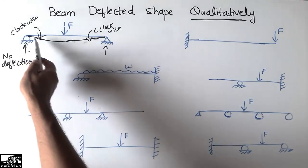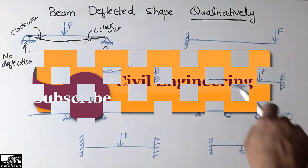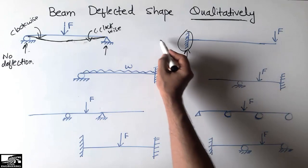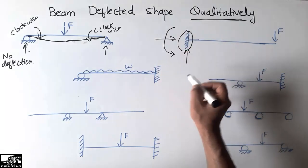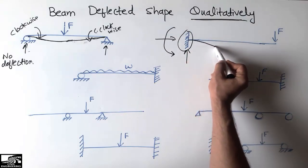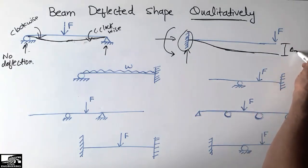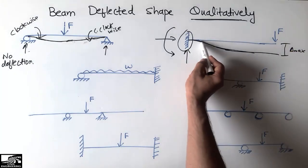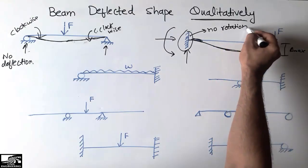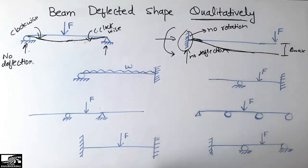Now consider the cantilever beam. Due to the fixed support, it provides vertical resistance, horizontal resistance, as well as moment resistance. So there will be no rotation at the fixed support end. The beam will deflect in this shape — there will be maximum deflection at the free end where the load acts, and there will be no rotation and no deflection at the fixed support because the fixed support resists all three types of reactions: horizontal, vertical, and moment.